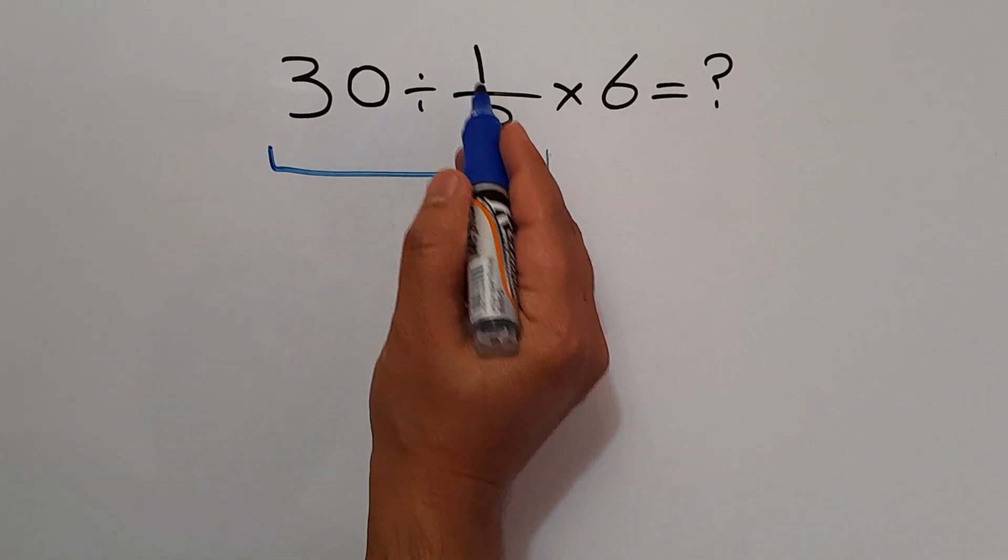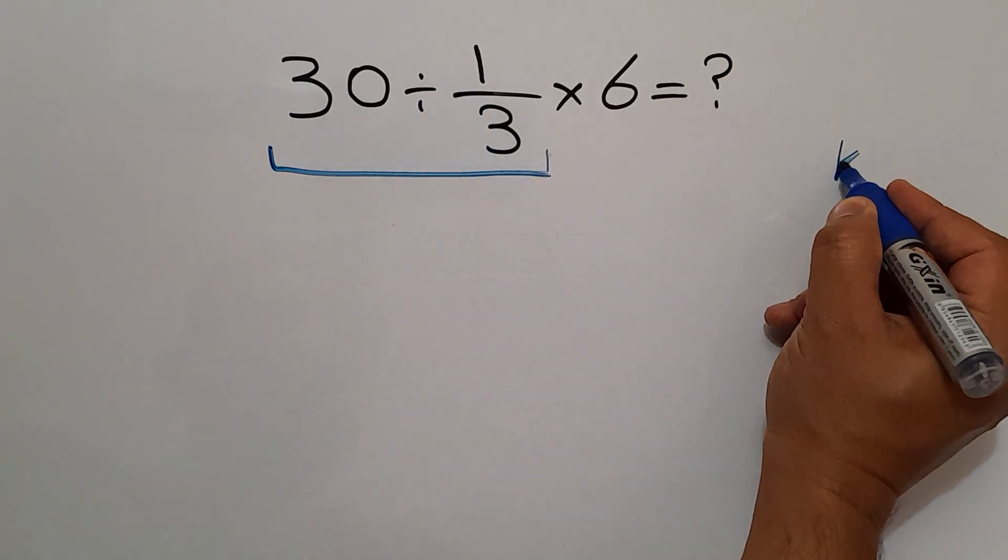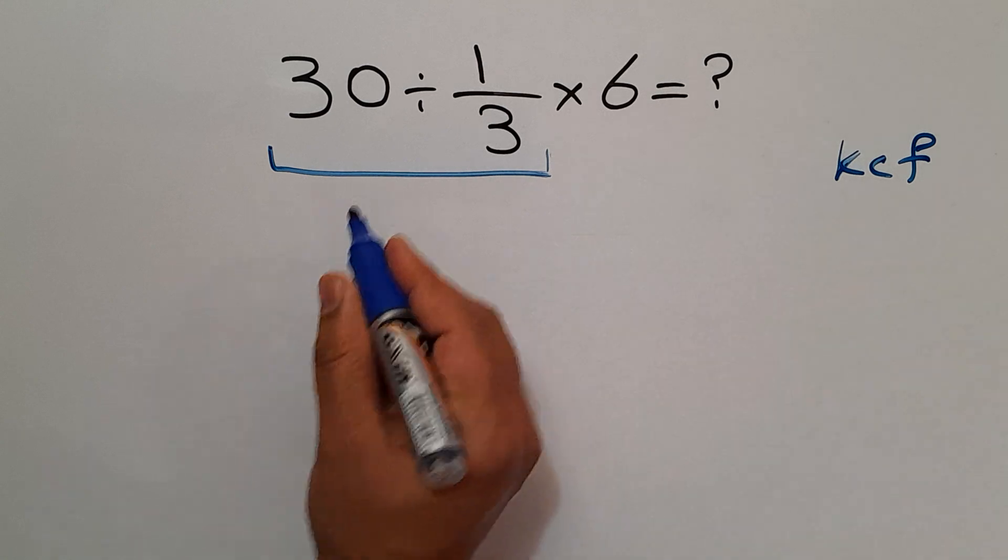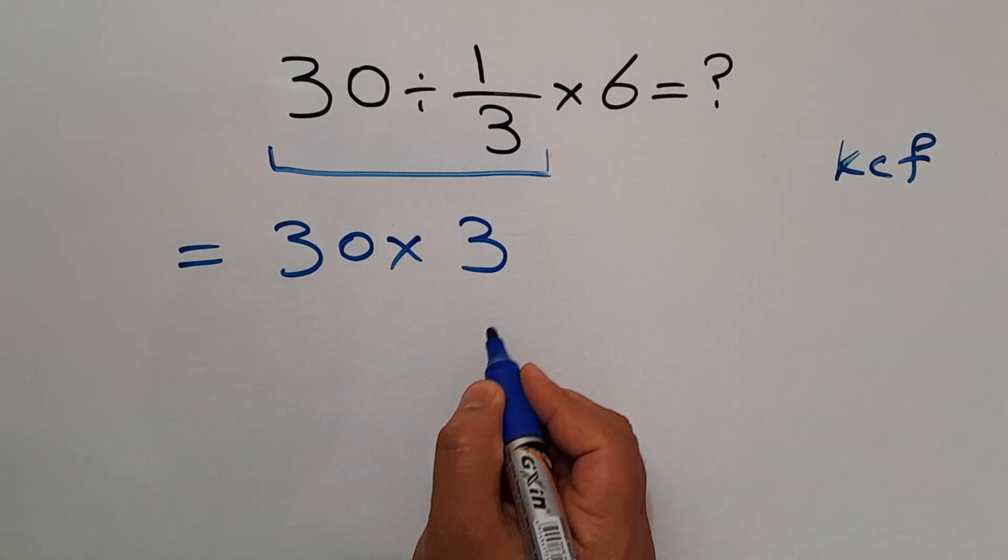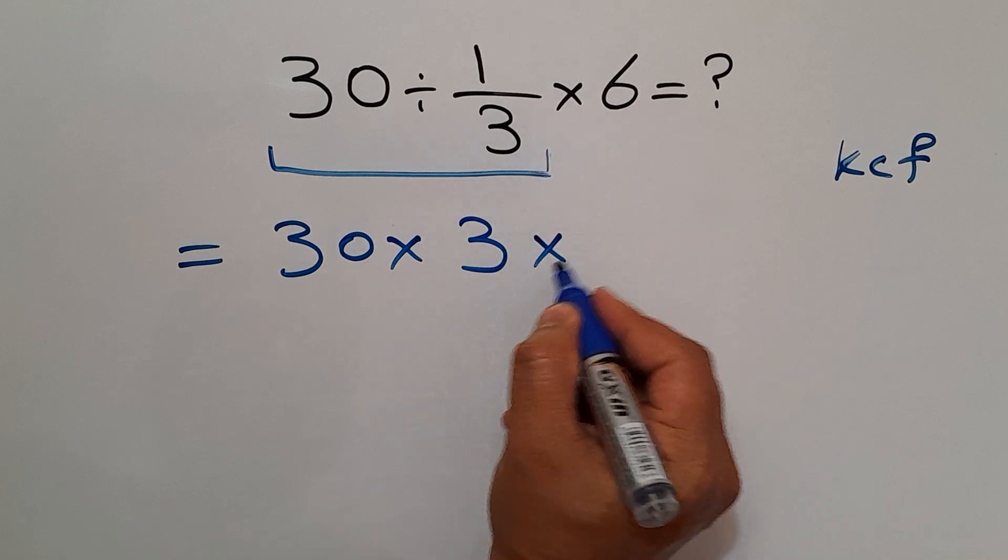30 divided by 1/3, according to the KCF rule, can be written as 30 times 3, times 6.